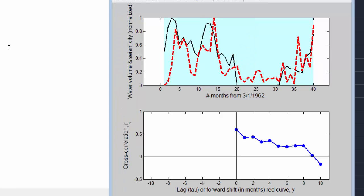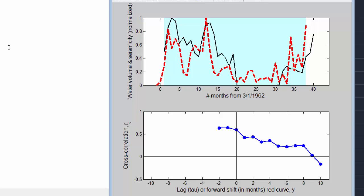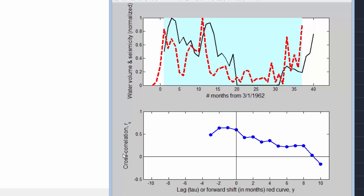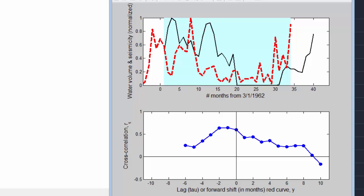So if we start again at 0 lag and shift the red curve the seismicity curve to the left we get a non-symmetric behavior for this correlation coefficient. And this is cross correlation as a function of lag or forward shift this time in months of the red curve relative to the black curve. So as I'm shifting to the left the lag is negative and you can see that the correlation actually went up a little bit as we shifted to the left and now it's going back down.